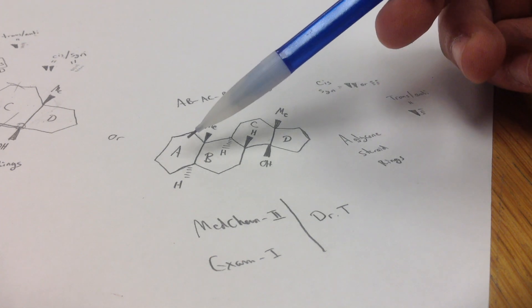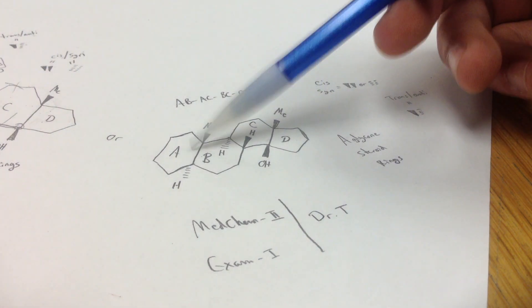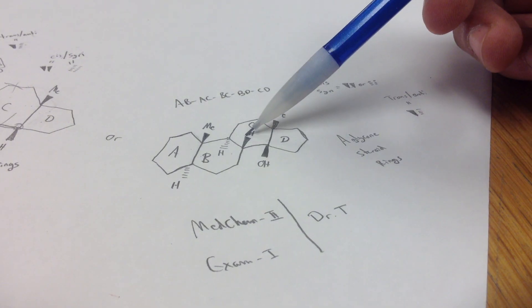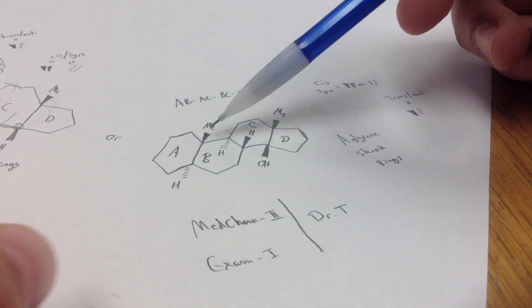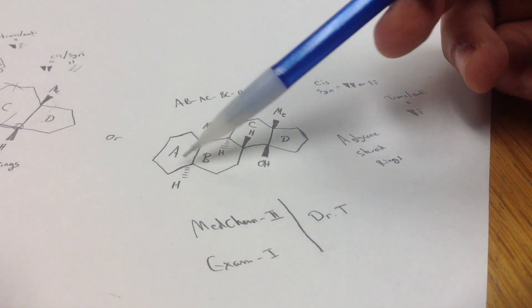So basically you want to look at A and B, A and C, B and C, and B and D. You want to look at the substituents that come off of these.